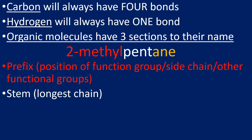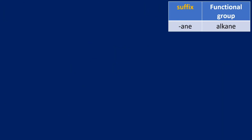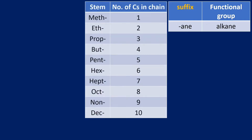The middle part is known as the stem, and that represents the longest carbon chain. For example, 'pent' tells us the chain is five carbons long. At the end we have the suffix, which identifies the functional group. In this video we only have one suffix to worry about: 'ane', which tells us the functional group is an alkane.